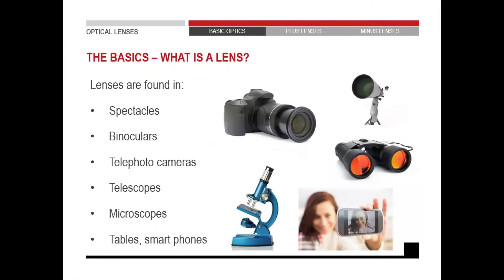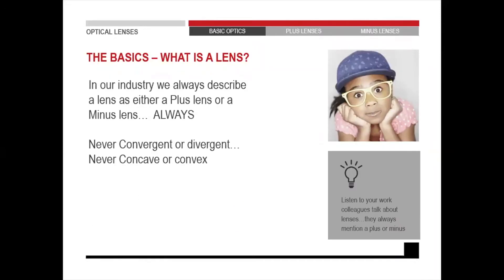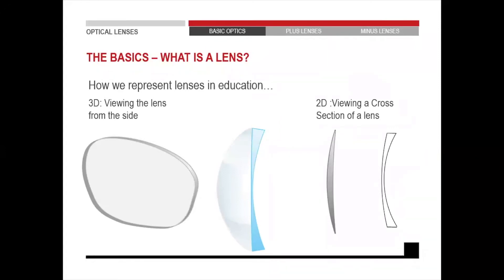We get lenses in all different places — spectacles, binoculars, cameras, telescopes, microscopes, and in your smartphone's camera there are a whole lot of lenses built in. Now, if you look at lenses from a scientific point of view, you may remember from school we spoke about convex and concave lenses, but in the optometry industry we always talk about a plus lens and a minus lens. The first image is a three-dimensional view of a lens, but if we cut it in half we can really see the shape.